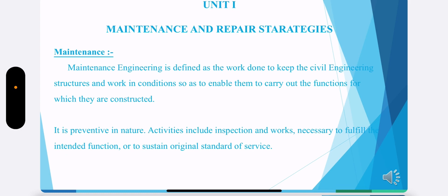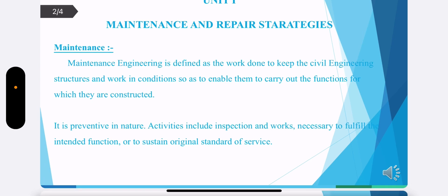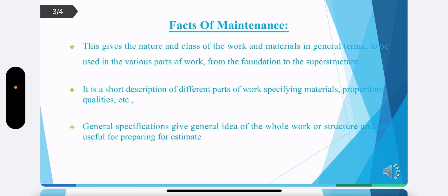Activities include inspection. We have to do the inspection every month — we have to inspect the house for where cracks will be formed and where damages will occur. That will be analyzed. Inspection will be done and we have to fulfill the intended functions, giving suggestions to retain the structure to the original standard of service. We have to do the maintenance to retain the structure in its original position and do the necessary repairs.